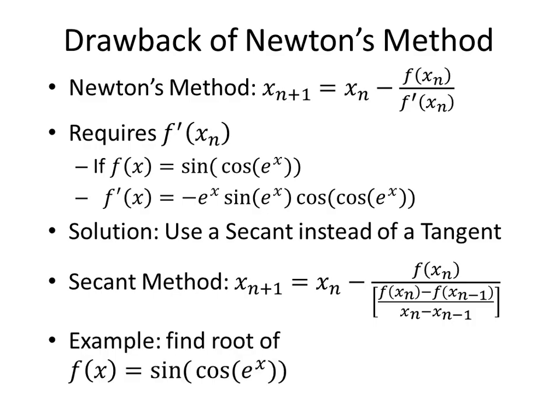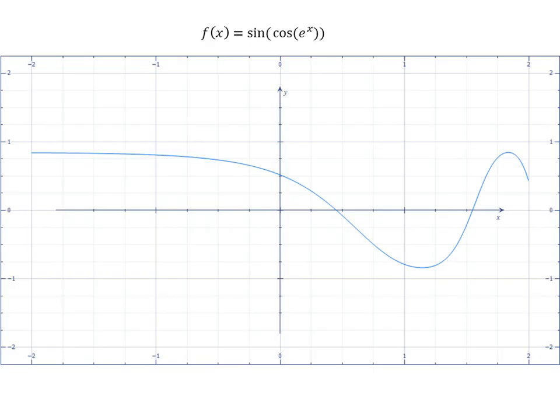Let's look at an example: sine of cosine of e to the x. Here we need to pick two points. So let's say we pick these two points; we'll call them x1 and x2. If we draw the secant between these two points, the secant intersects the x-axis, which will give us our x3 point.